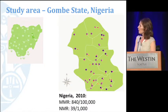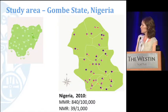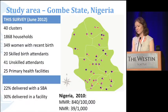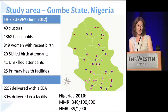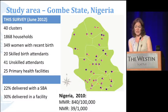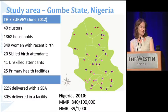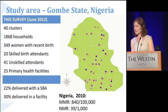In northeast Nigeria, in Gombe State, we went to almost 2,000 households, interviewed 349 women with a recent live birth, identified and interviewed 20 skilled birth attendants, and surveyed 25 primary health facilities. The percentage of women who delivered with a skilled birth attendant in the last year was 22%, and 30% had delivered in a health facility.